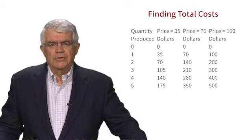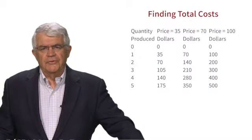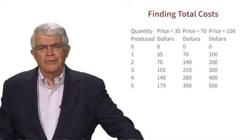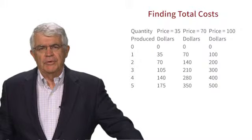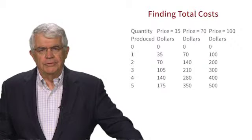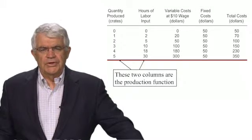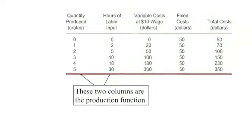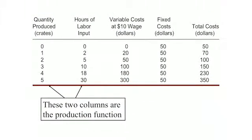Now let's think about costs. To get costs, we think about the firm's production function, which tells us how much output you get from a certain amount of labor. It relates the firm's output — pumpkins — to the firm's input — labor. The first column gives the quantity produced in crates, and the second shows how many hours of labor it takes. One crate takes two hours, and five crates takes 30 hours. That's what we mean by the production function.